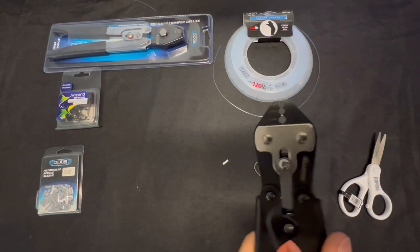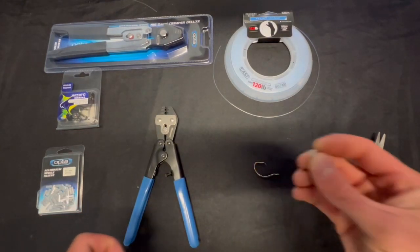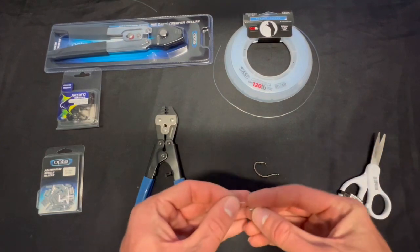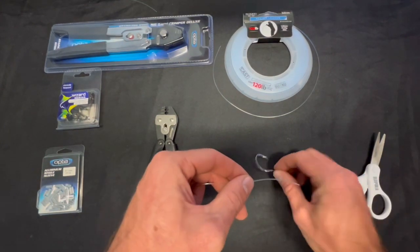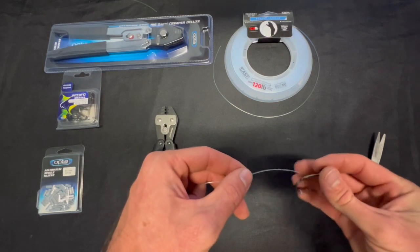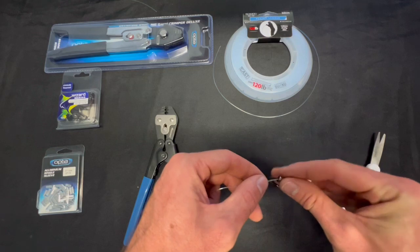Okay, next we're going to grab our crimp and we're going to put the crimp onto the leader. Then we're going to grab whatever we want to use, whether it be a hook or a swivel. In this case a hook, we'll thread it through. It's a circle hook, that's a Serene hook.